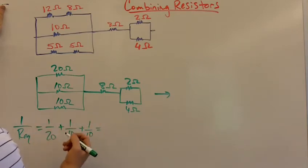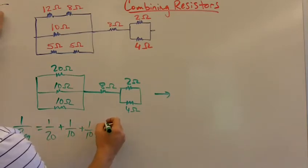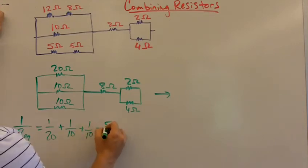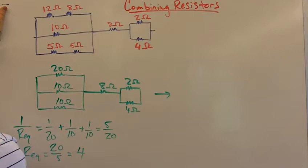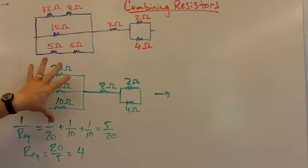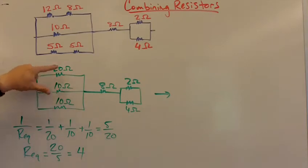5/20, and then we say Req equals the reciprocal, 20/5, so that equals 4Ω. If we combine all these, the total equivalent resistance of this parallel circuit is 4Ω.